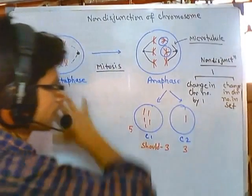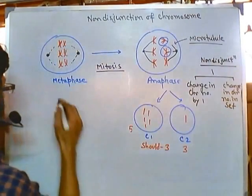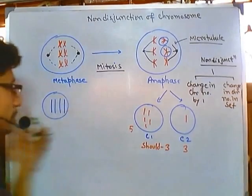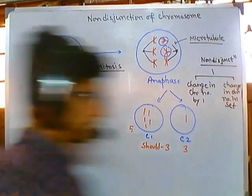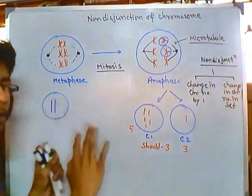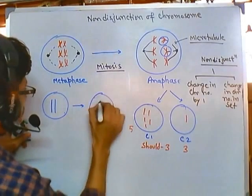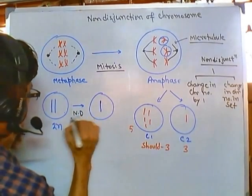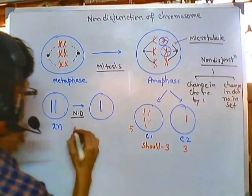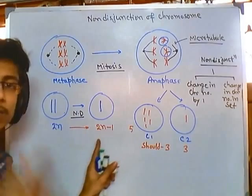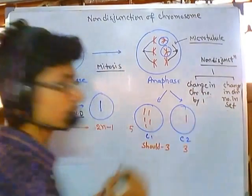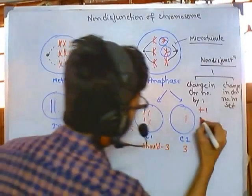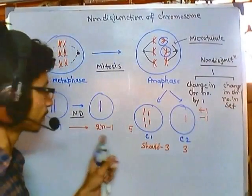Due to this kind of non-disjunction, it may happen that a cell which normally requires four chromosomes — let's say two chromosomes — due to this disjunction, it is having only one. So it is 2N, but what we get due to non-disjunction is one chromosome only, which is now 2N minus one. So one chromosome less — that is a change in chromosome number by one, meaning either plus one or minus one, increment or decrement by one.